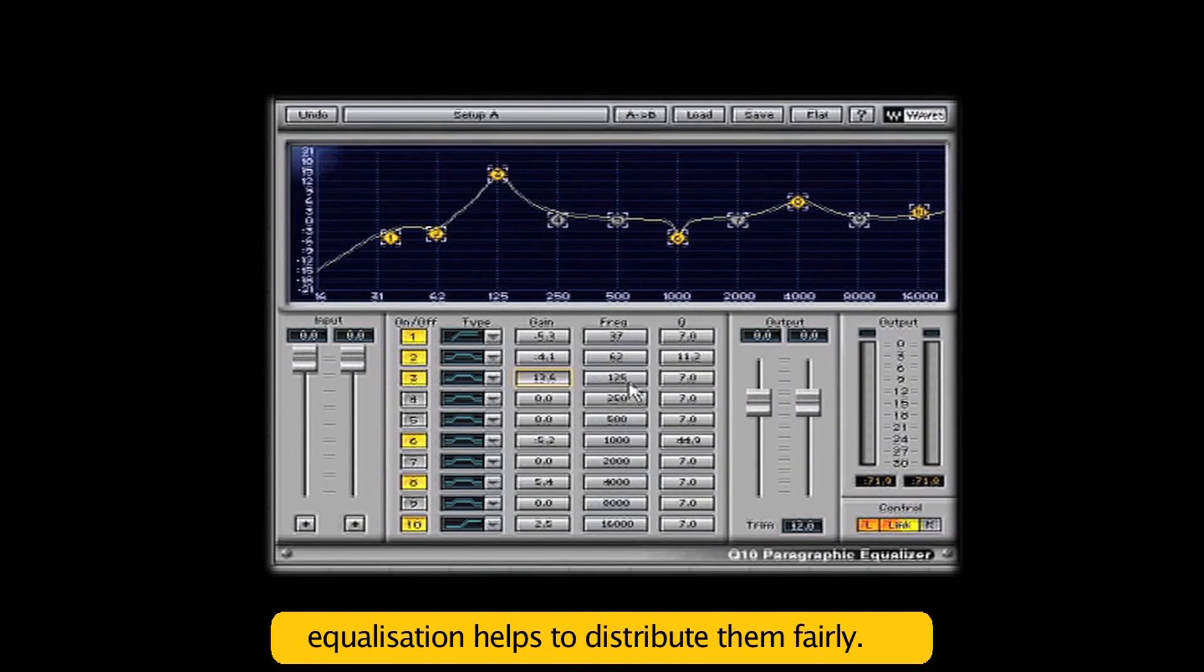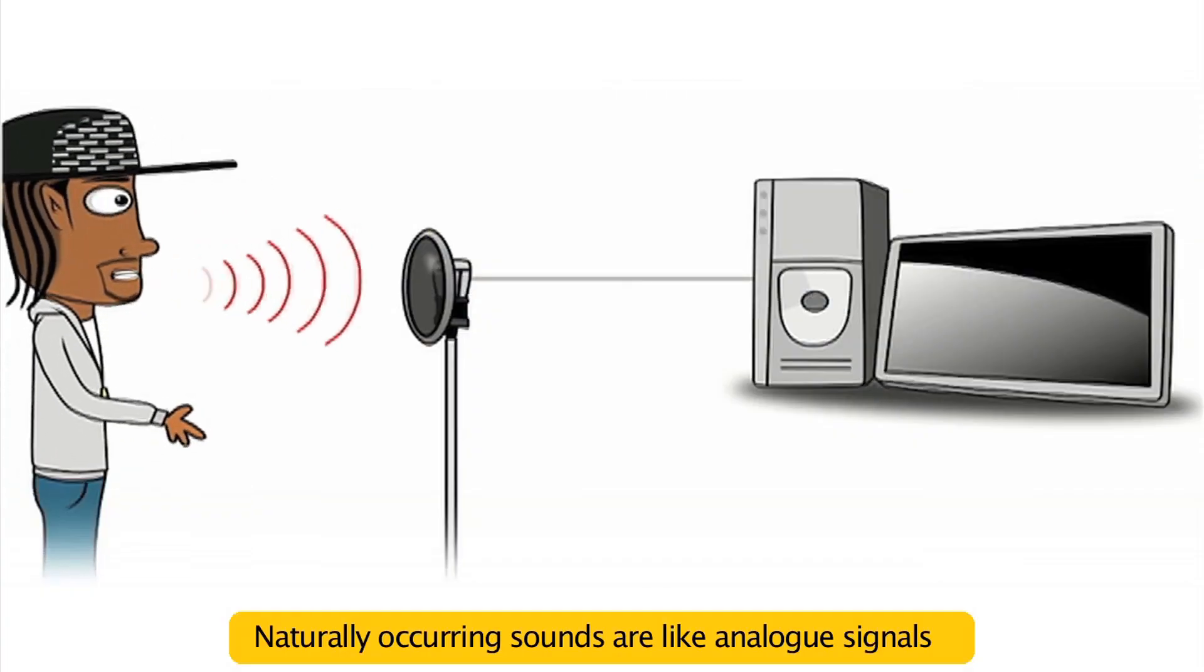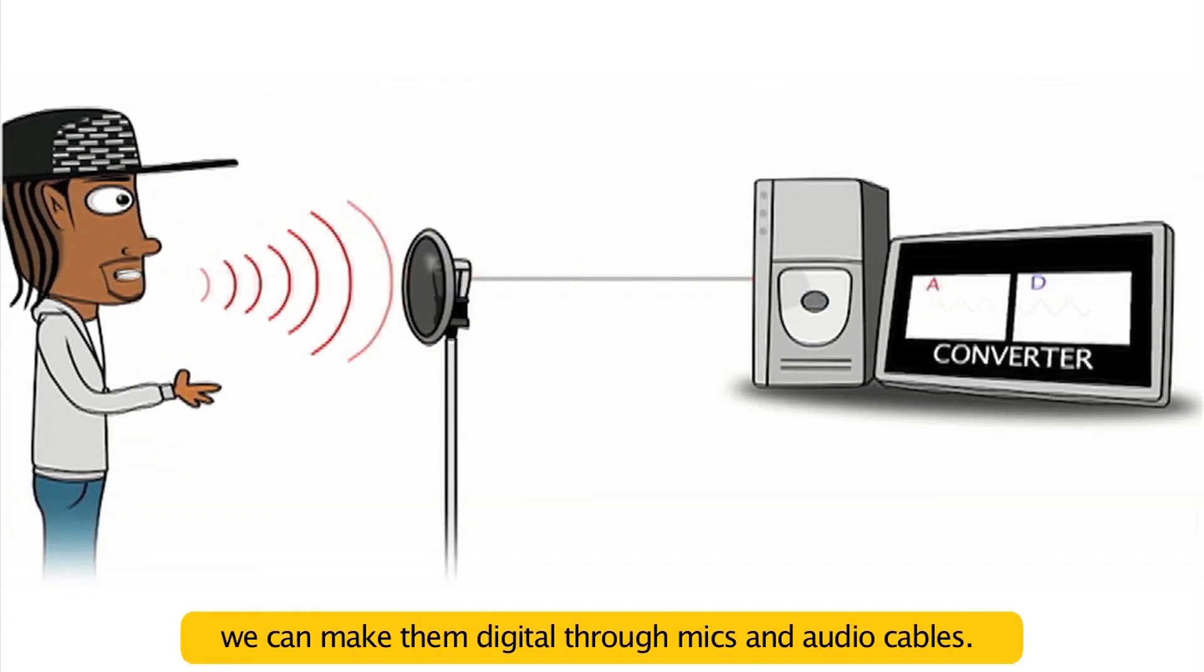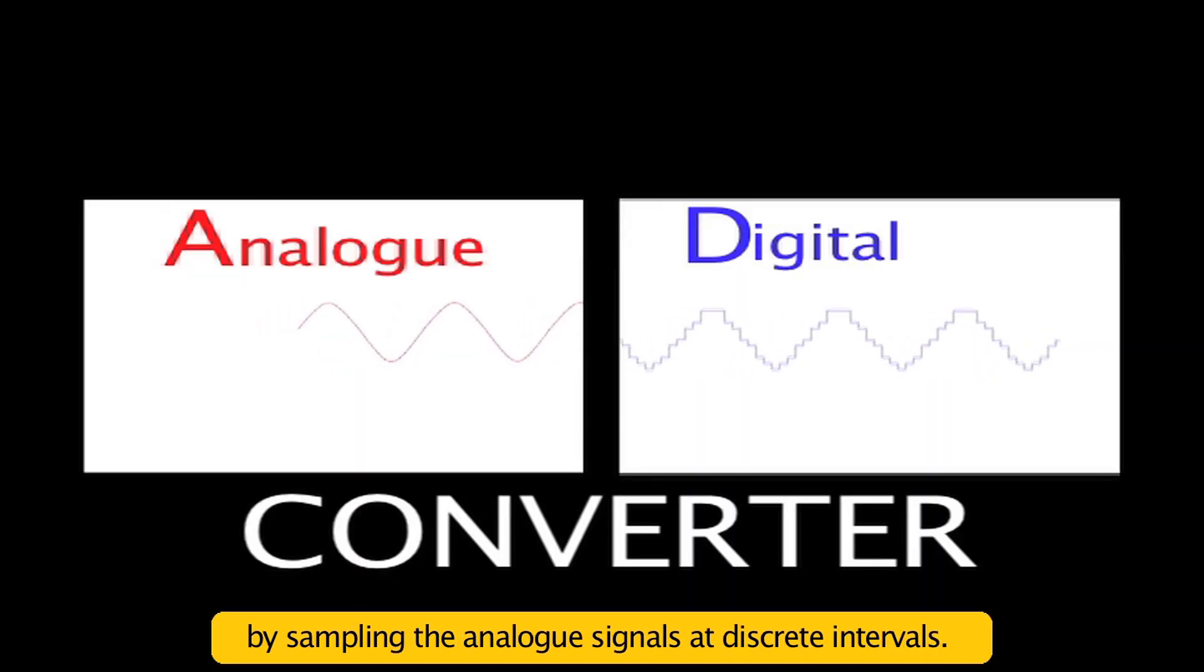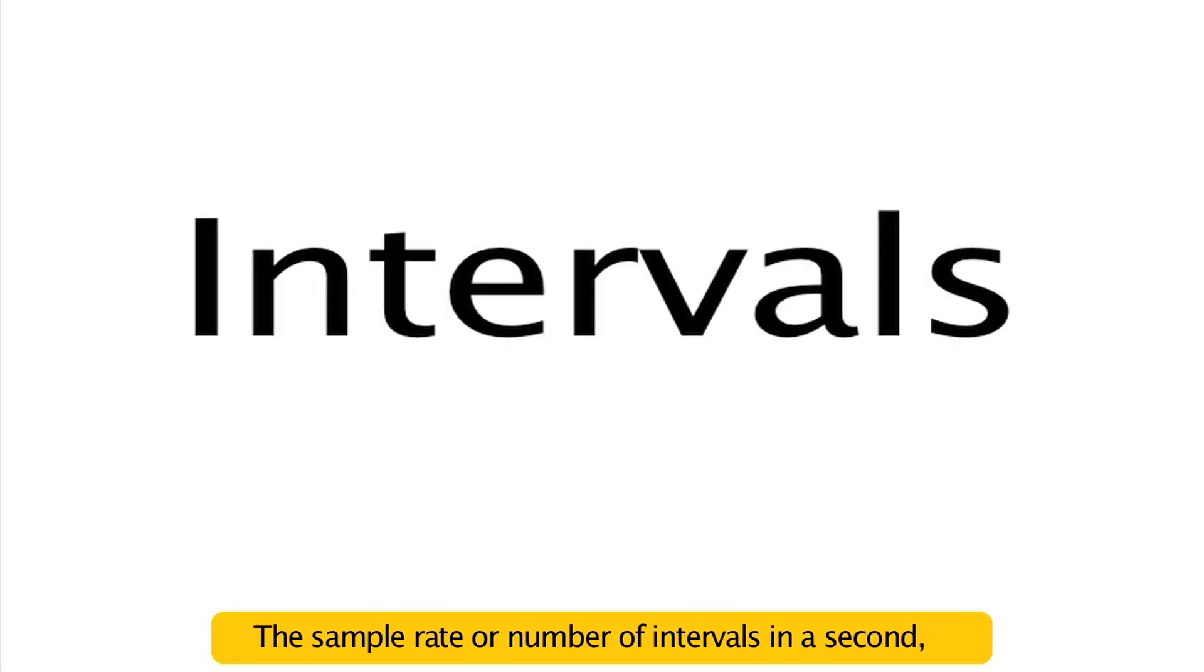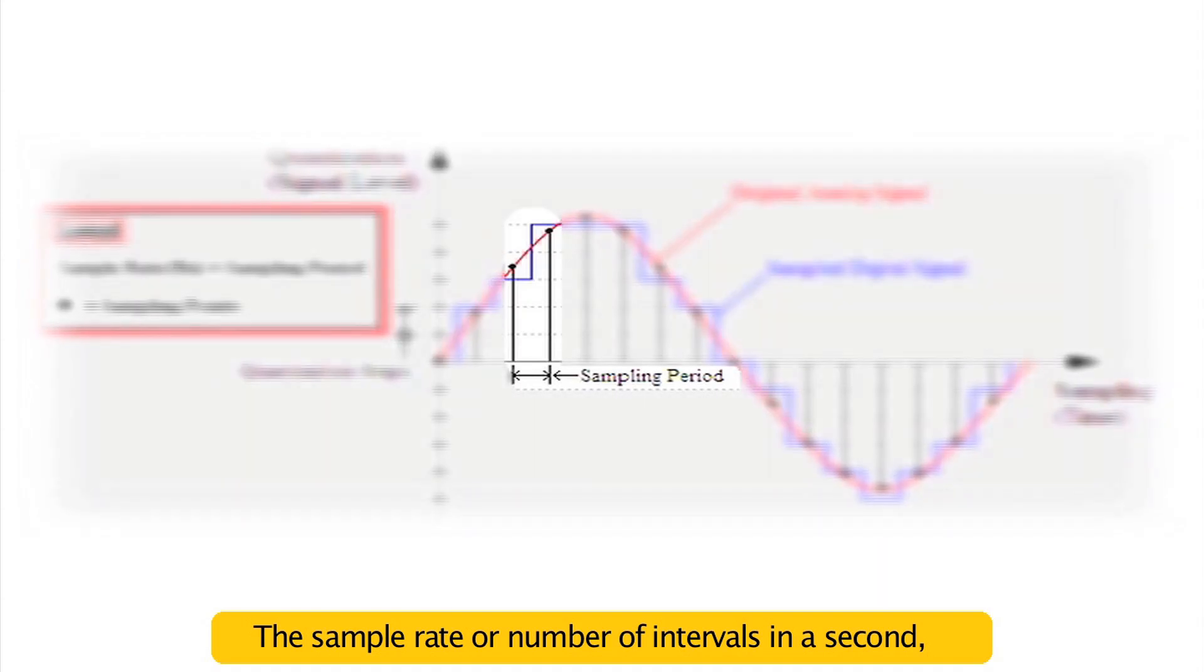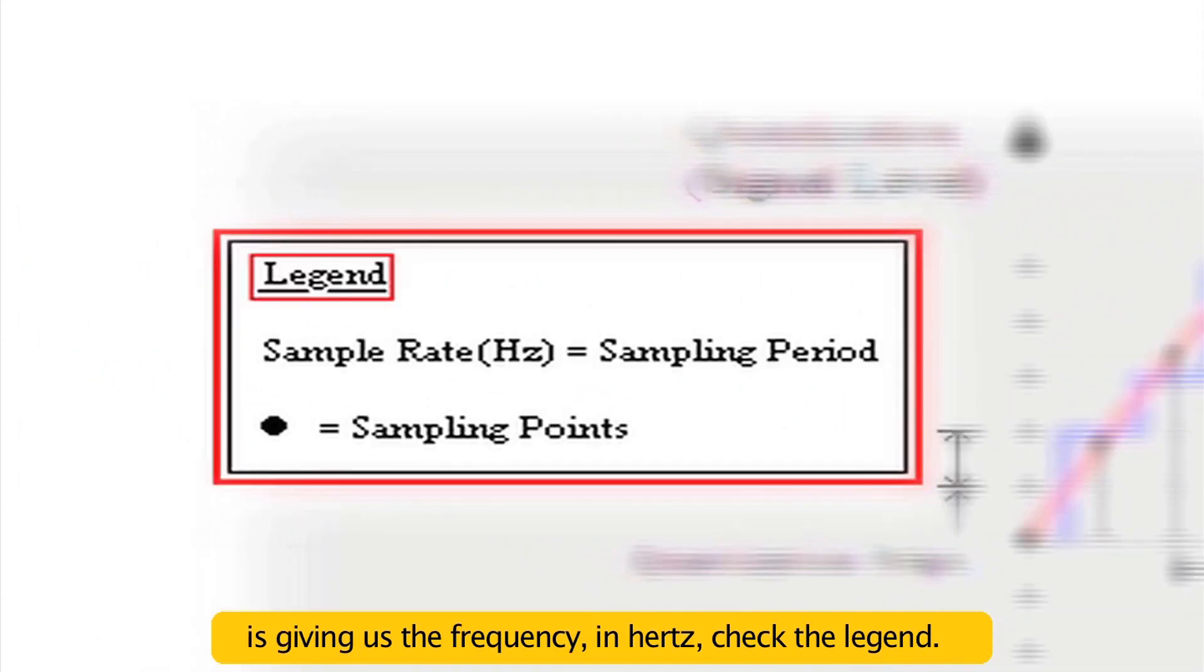Naturally occurring sounds are like analogue signals. We can make them digital from mics and audio cables. It's an AD converter that converts analogue to digital by sampling the analogue signals at discrete intervals. The sample rate, or number of intervals in a second, is given as a frequency in hertz.